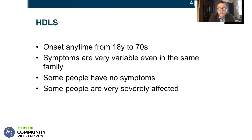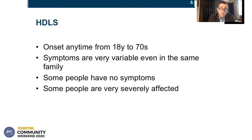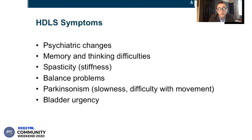HDLS has a really wide age of onset, which can be as low as 18 but up into the seventies — there have been people in their late seventies reported to first develop symptoms. The symptoms are very variable in HDLS, even within the same family. You can have one patient who develops symptoms at a young age and another at a very old age. Some patients are completely asymptomatic, whereas a sibling might be very severely affected. The most common symptoms would be psychiatric changes, memory and thinking difficulties, stiffness in the limbs, balance problems, and Parkinsonism — a slowness and difficulty with movement. Bladder urgency can be quite common as well.